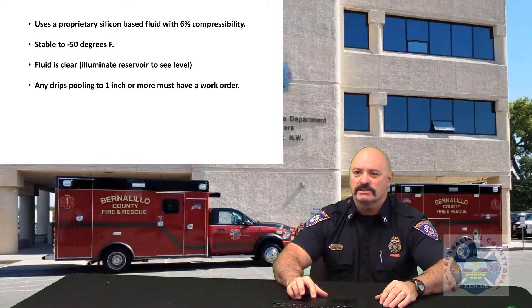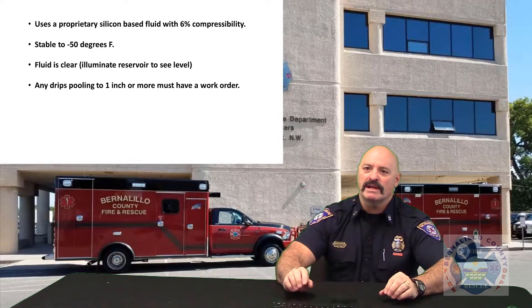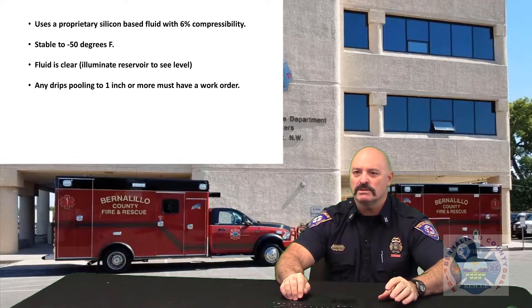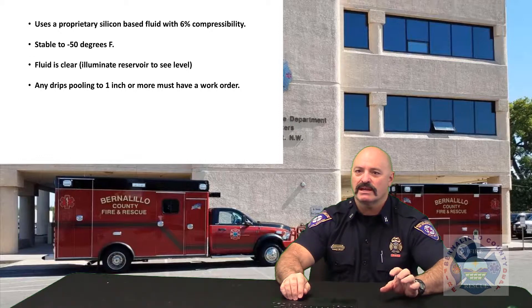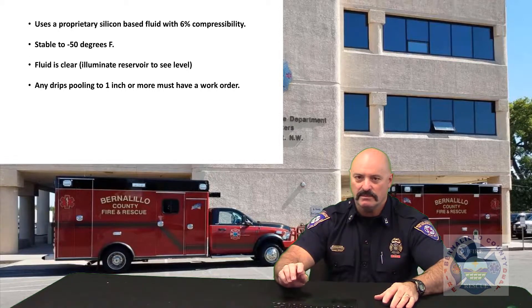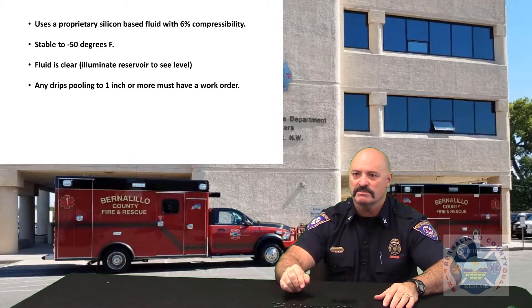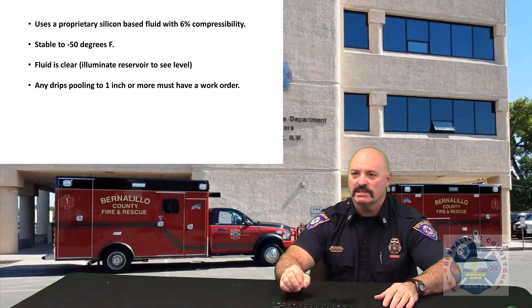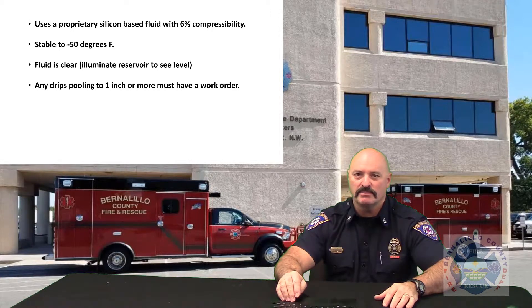During your truck checks, you should look for seeps and drops coming from the system. A seep will be noticeable on the ram or other components and that can be normal. A leak will cause drips that will pool to one inch or more and will be covering the bottom of the compartment box. When you're driving, the air gets splattered across the bottom of the box. So any drips over one inch in diameter and anything where you're seeing a lot of fluid on the bottom of the box should be written up in a work order.